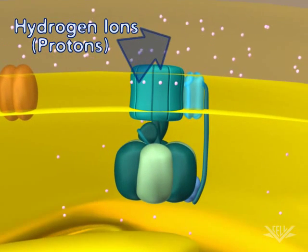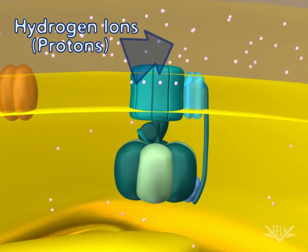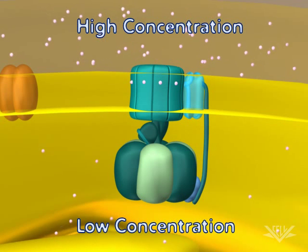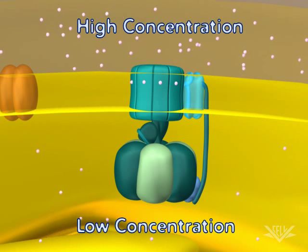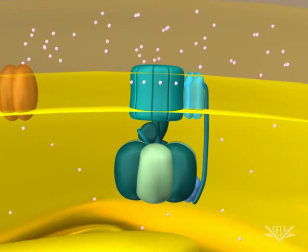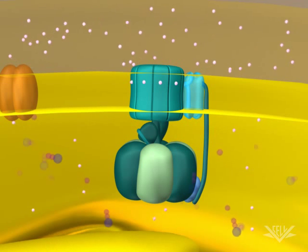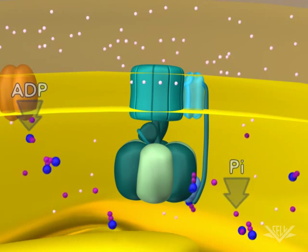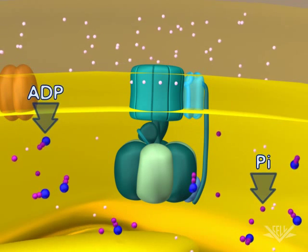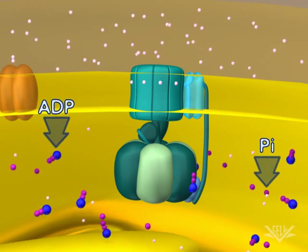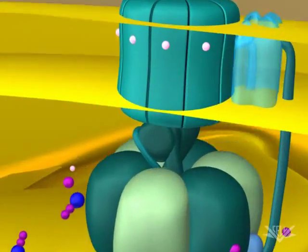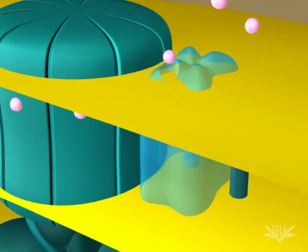Notice the large difference in the number of hydrogen ions on the two sides of the membrane. This difference is a hydrogen ion, or proton, concentration gradient. The energy associated with this gradient is used to synthesize ATP from ADP and Pi. This occurs at the ATP synthase complex.